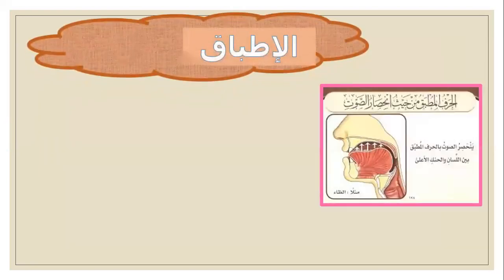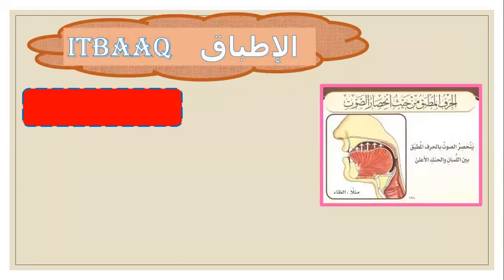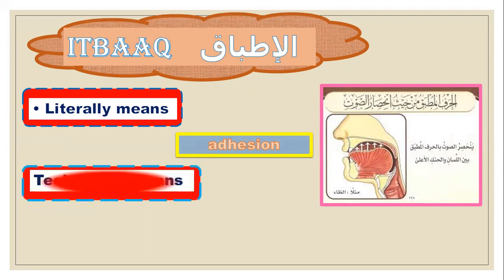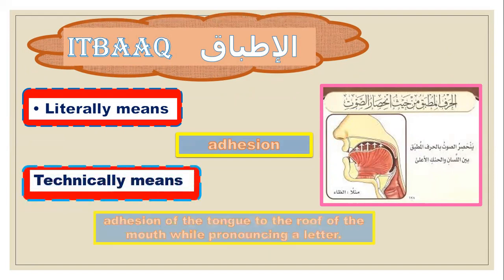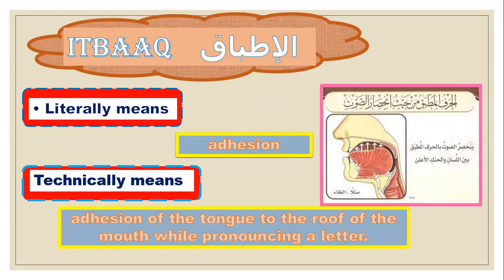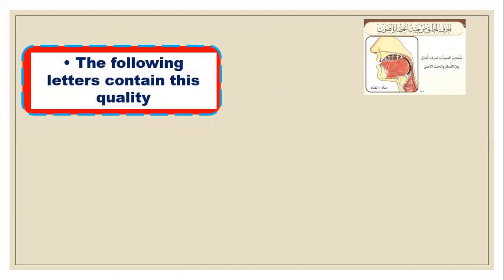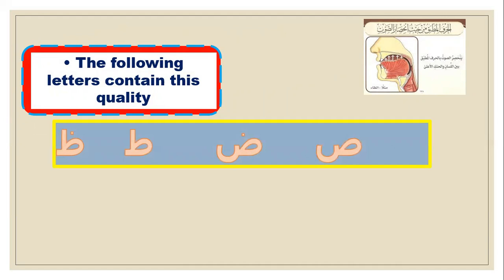Let's start with Idbaq. Idbaq means adhesion — technically, it means adhesion of the tongue to the roof of the mouth while pronouncing a letter. The following letters contain this quality: Sad, Dad, Ta, and Dha.